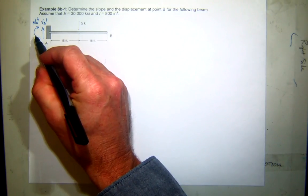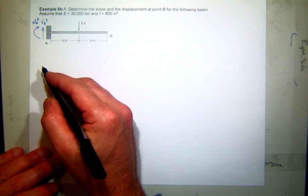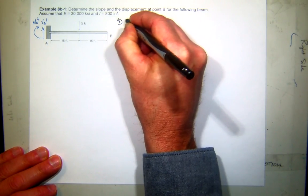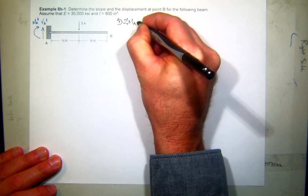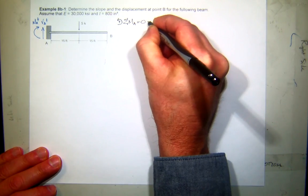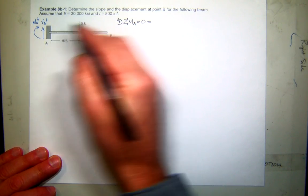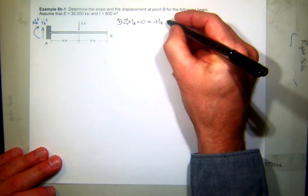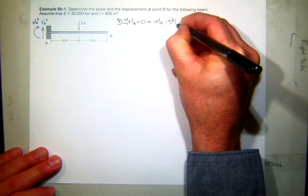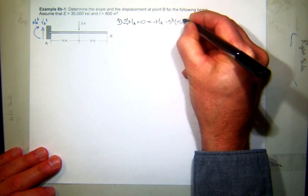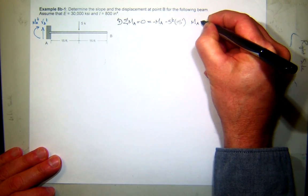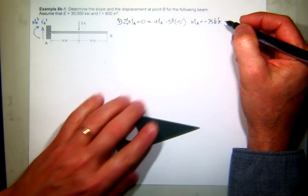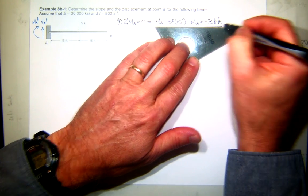So how do I find the moment at A? Probably sum moments at A, right? So let's do that. So using right-hand rule and summing moments at A, making sure I have equilibrium. I look at the free body diagram, and I have this moment, which with my sign convention is negative. I have the moment of this 5-kip force, which is also negative, and it has a moment arm of 15 feet. So it looks like my moment at A is negative 75 kip feet. Everybody see that?